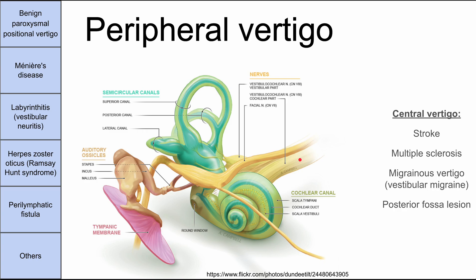This is a short video on peripheral vertigo. Peripheral vertigo refers to vertigo that's caused by a problem with the vestibular system in the inner ear. These are the semicircular canals which help you with balance, and the most common causes of peripheral vertigo are these three up here, but I'll be talking about all of these causes one by one.